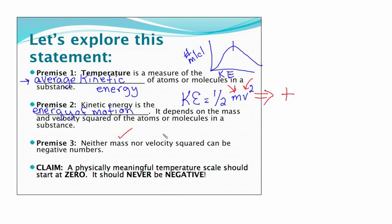Because neither mass nor velocity squared can be negative numbers. Therefore, and here's the support of my claim, a physically meaningful temperature should never, ever be negative. It should start at zero. And that's what Kelvin did for us.